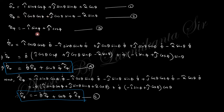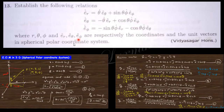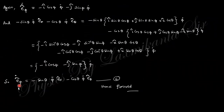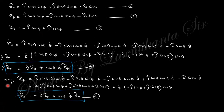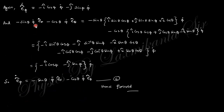Similarly, for the derivative of e_θ with respect to time, for each of the i_cap, j_cap, and k_cap components there are two terms. Taking θ̇ and φ̇ as common you can easily find out the next relation. For the third relation, take the derivative of e_φ and substitute the known values to confirm the result.